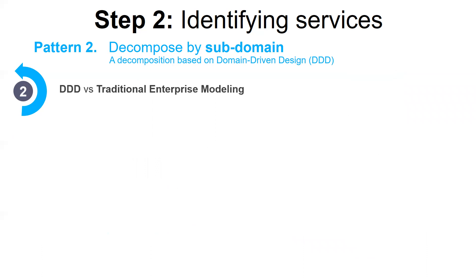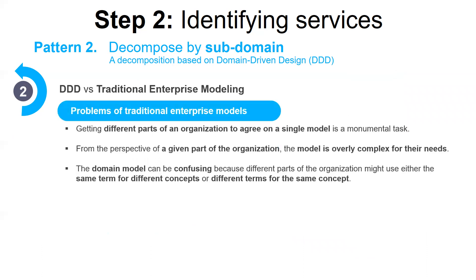DDD is quite different than the traditional approach to enterprise modeling, which creates a single model for the entire enterprise. In traditional enterprise modeling, getting different parts of an organization to agree on a single model is a monumental task, meaning the model is overly complex for any given part of the organization. Moreover, the domain model can be confusing because different parts of the organization might use the same term for different concepts, or different terms for the same concepts.